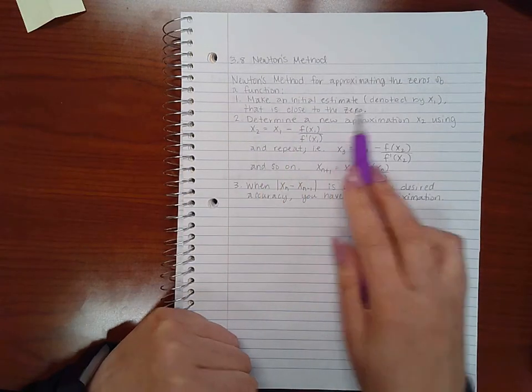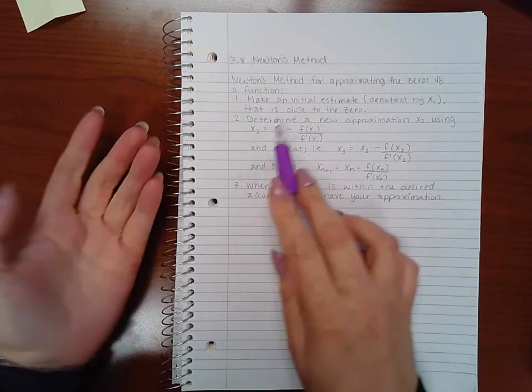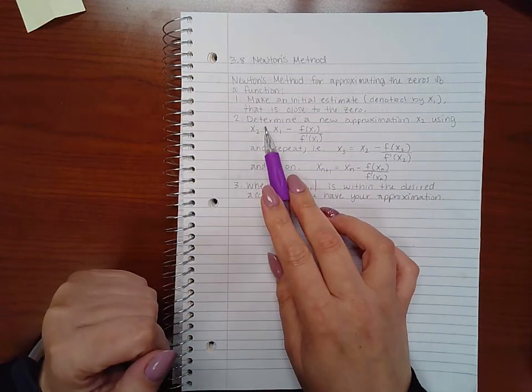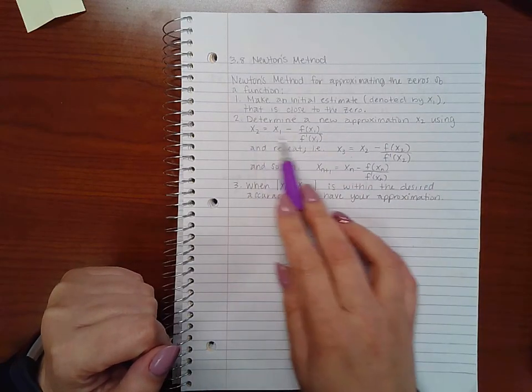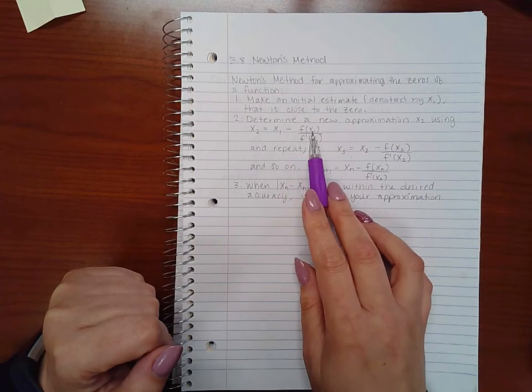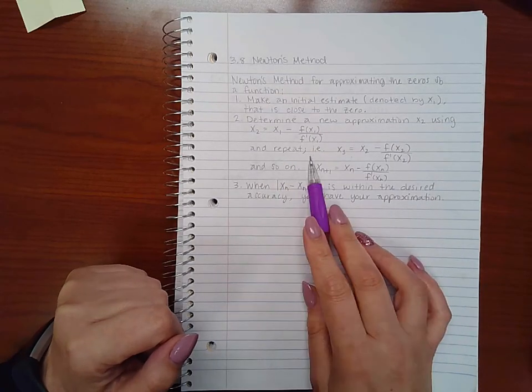Make an initial estimate, denoted by x1, that is close to the zero. Usually we use a graph for that. Determine a new approximation, x2, using this formula: x1 minus f of x1 divided by f prime of x1, and repeat.